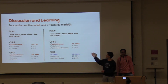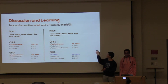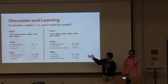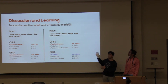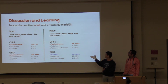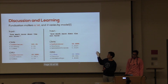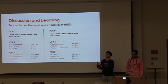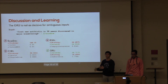One surprising finding was how much punctuation matters. For example, the post 'How much mass does the sun have?' with a question mark — the GRU correctly predicts Ask Science. But without the question mark, it thinks the post is from a joke subreddit. This makes sense for the GRU because words at the end of the sentence are weighted more heavily in that model.